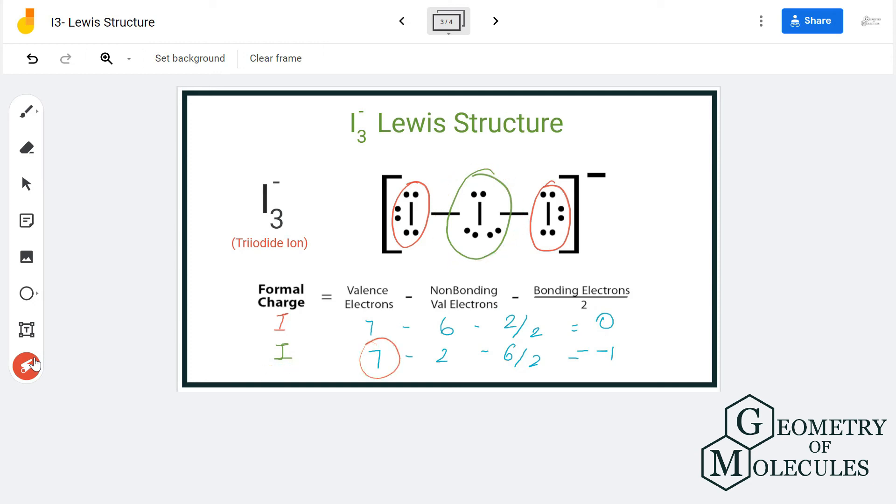valence electrons, six non-bonding electrons, and four bonding electrons, which means it has a charge of minus one. You can see that there is a negative sign on the tri-iodide ion, and that is because it has a minus one charge on the central atom.